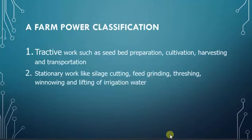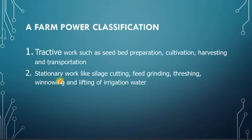For stationary work, we mostly use the RPM (revolutions per minute). This kind of work includes silage cutting, feed grinding, lifting, irrigation, water pumping, and so on. As we mentioned before, the animal can easily do tractive work, while it is hard and not efficient for it to do stationary work.